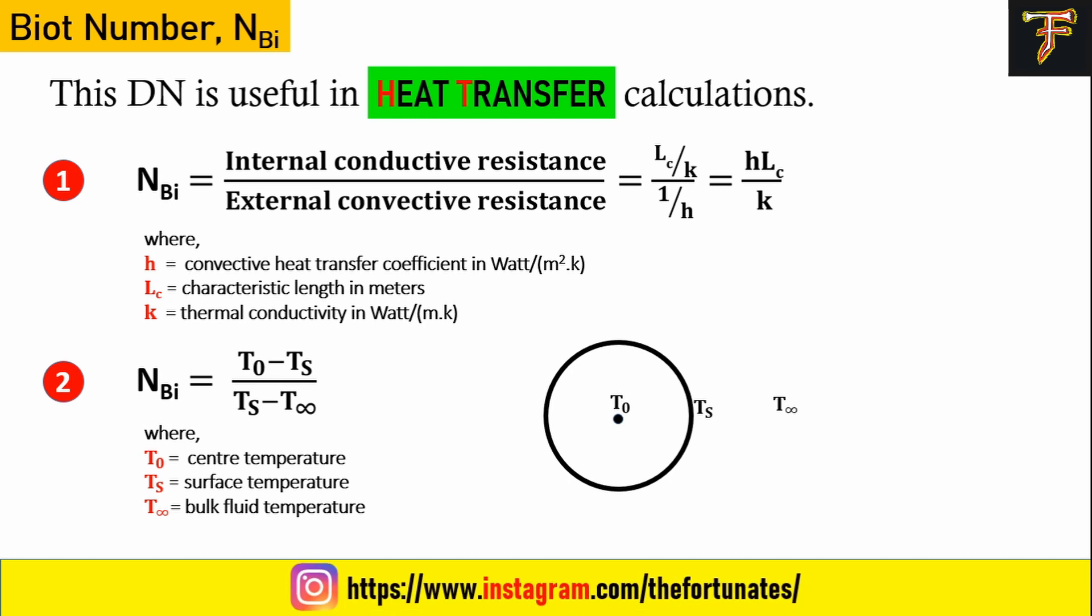What is Biot number? Biot number is defined as the ratio of internal conductive resistance to external convective resistance. This may also be given as h×Lc/k, where h is convective heat transfer coefficient, Lc is characteristic length, and k is thermal conductivity of solids.